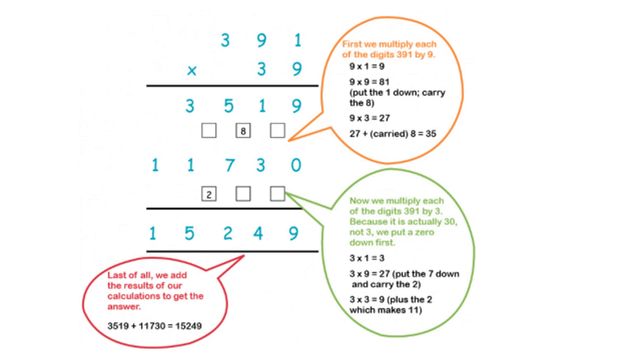Then in the next row, you multiply by 3. If you multiply by 3, you must skip a place value. Under the 9, you put a 0. 3 times 1 is 3, 3 times 9 is 27, carry 2. 3 times 3 is 9, plus 2 is 11. For the next row, you get 1, 1, 7, 3, 0.